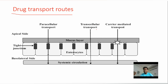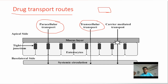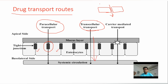There are basically two main drug transport routes: one is paracellular and another is transcellular. Paracellular means the gap between two cells — the drug passes through that gap. Transcellular route means the drug is absorbed through the cell itself — the route goes directly through the cell.